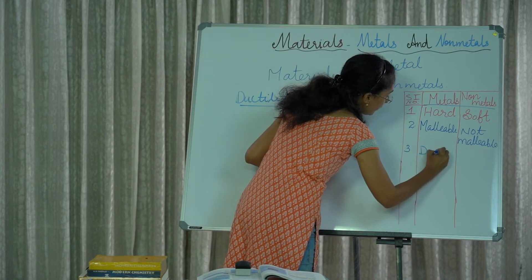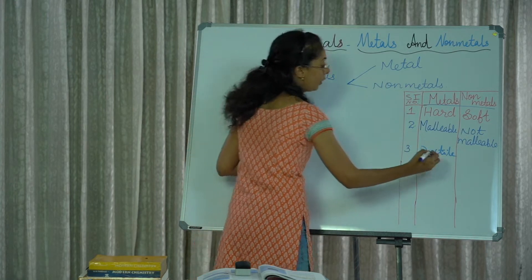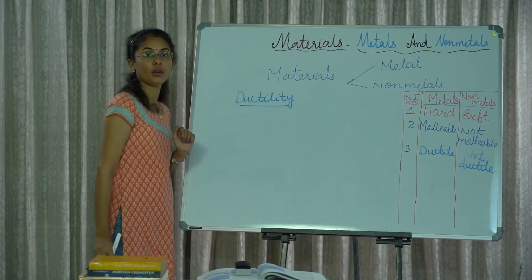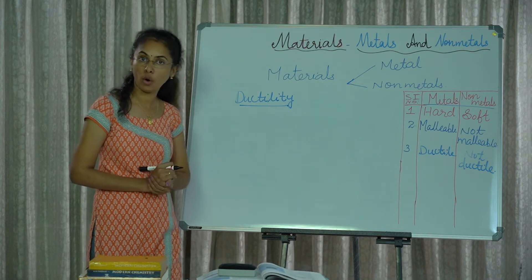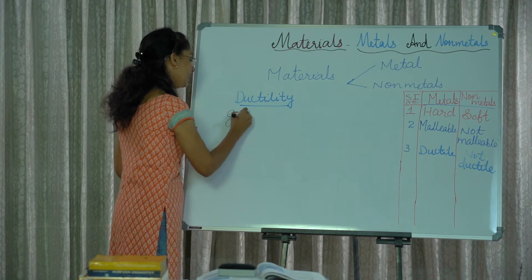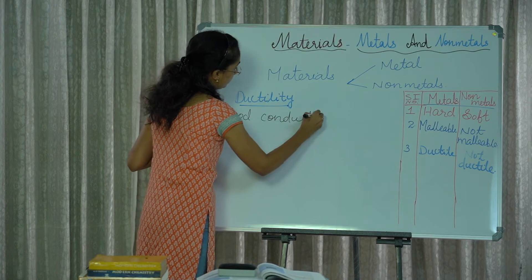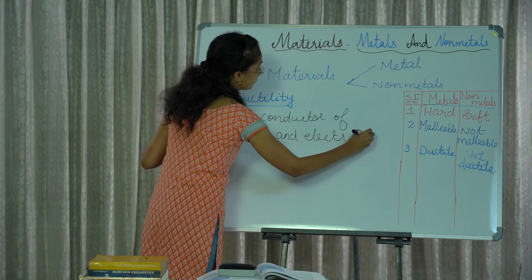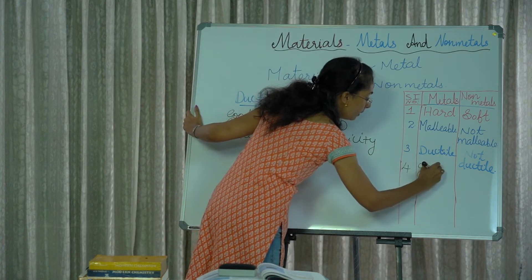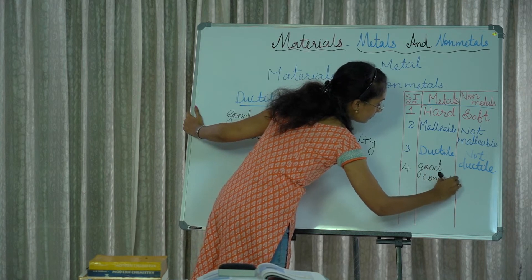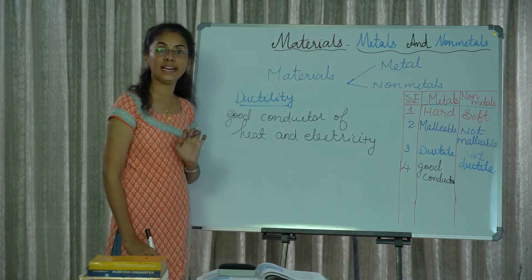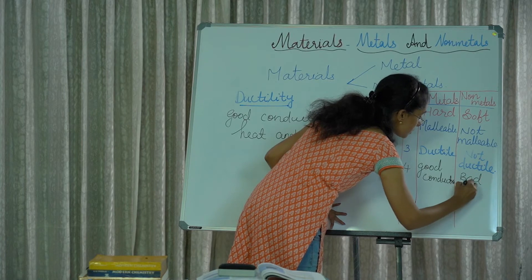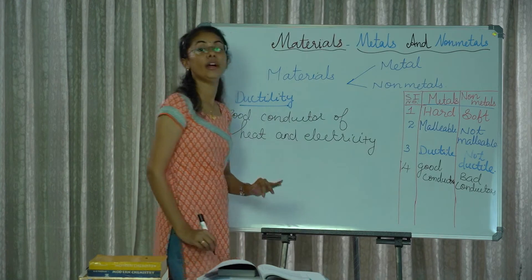Metals are ductile and non-metals are not ductile. The next property of metals is that metals are good conductors of heat and electricity. In the case of non-metals, they are bad conductors — not conductors of heat and electricity.